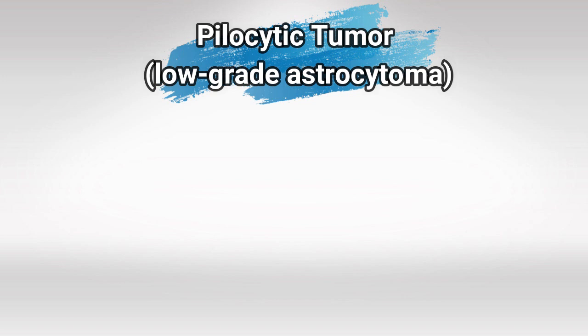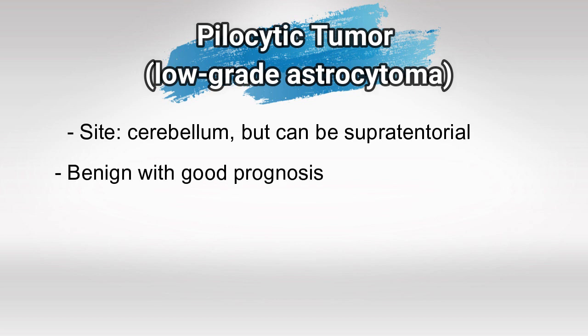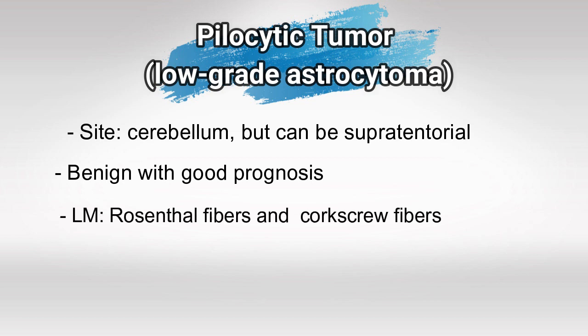First we have the pilocytic tumor, also known as low-grade astrocytoma. The most common site is the cerebellum, but it can be supratentorial — meaning above the tentorium, which is the layer that separates the cerebral hemisphere from the cerebellum. Usually they're benign with good prognosis, and under the light microscope we're going to see Rosenthal fibers and corkscrew fibers. They can be stained with GFAP stain.